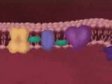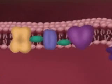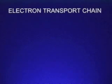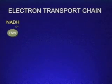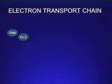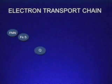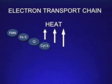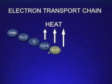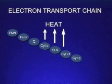NADH and FADH2 carry high-energy electrons from the previous stages of respiration to the electron transport chain. The electrons are passed from carrier to carrier and gradually lose energy. Some of this energy is used to synthesize ATP. The rest is lost as heat.